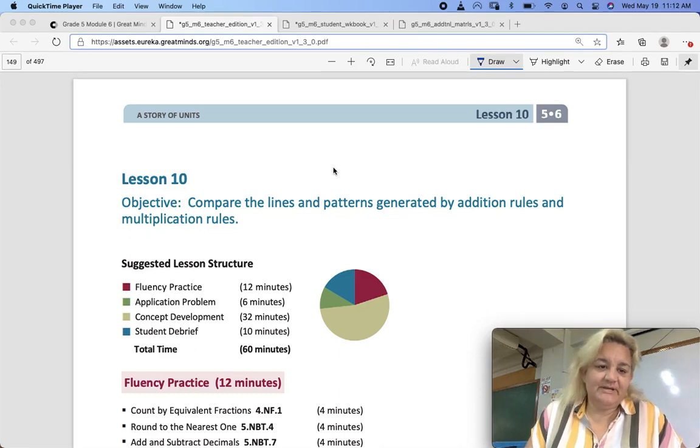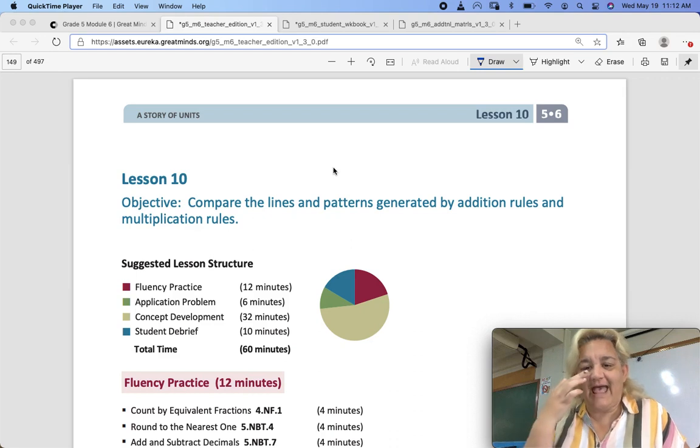Hi, 5th graders. This is Eureka Math. We are in Module 6, and this is Lesson 10. The objective is to compare the lines and patterns generated by addition rules and multiplication rules.